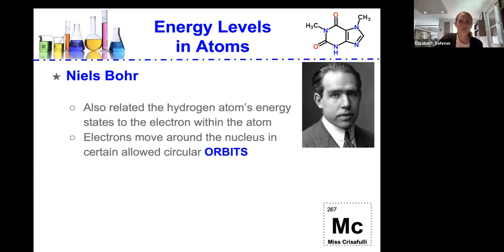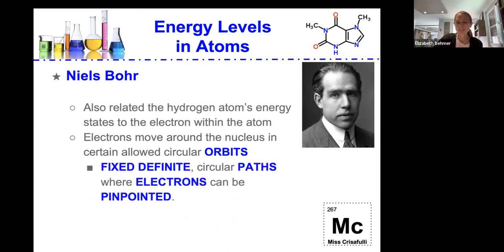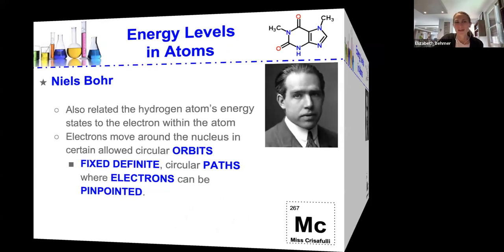So he stated that electrons move around the nucleus in certain allowed circular orbits that are fixed, definite circular paths where electrons can be pinpointed. This was a really important discovery.